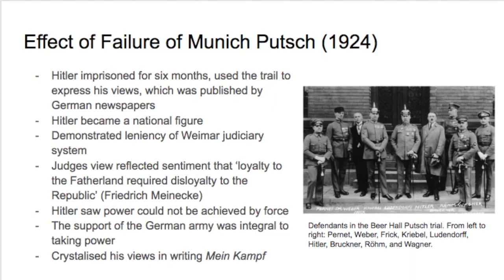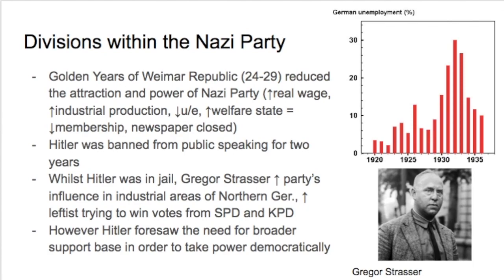In his time in jail, Hitler crystallised his views in Mein Kampf, which becomes a pivotal text for the ideology of Nazism. However, he was challenged during this time by Gregor Strasser, who started to take some force from Hitler. While Hitler was in jail — and banned for two years from public speaking — Gregor Strasser became quite popular. This was during the golden years of the Weimar Republic from 1924 to 1929.